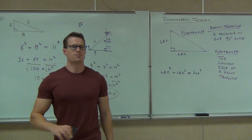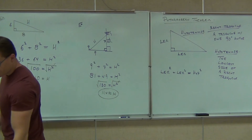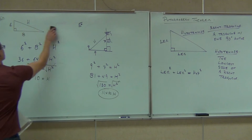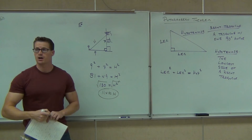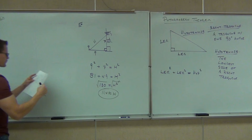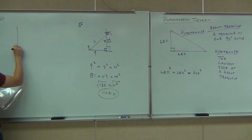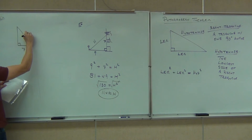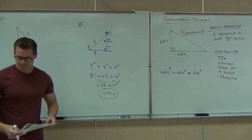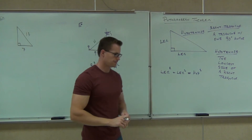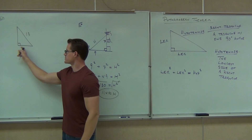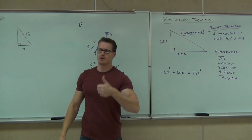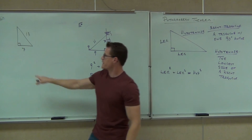One other very important application — maybe even more useful — is finding the length of a missing leg. If you know the length of your roof needs to be 13 feet and you know this length is 7, you need to cut a post to hold that roof up. So we need to find this missing leg length. Have I given you both legs? No — I've given you one leg and the hypotenuse.